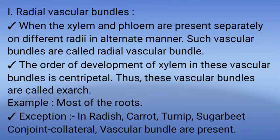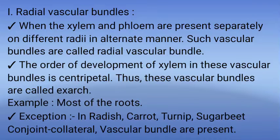Radial Vascular Bundles: When the xylem and phloem are present separately on different radii in an alternate manner, such vascular bundles are called Radial Vascular Bundles. The order of development of xylem in these vascular bundles is in a centripetal manner. Thus, these vascular bundles are called Exarch Vascular Bundles.